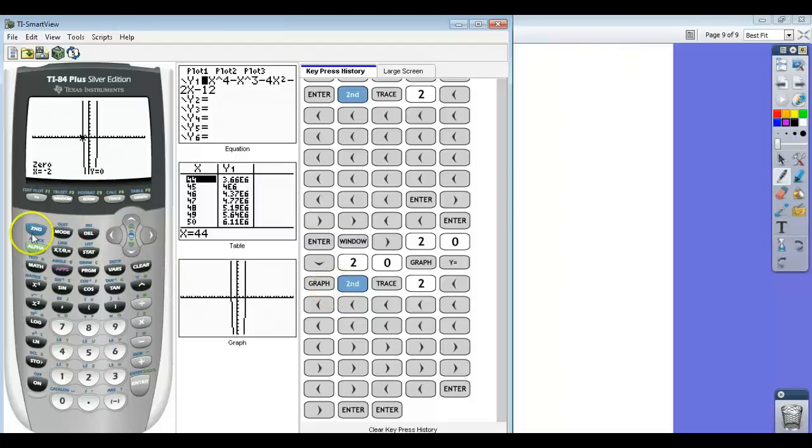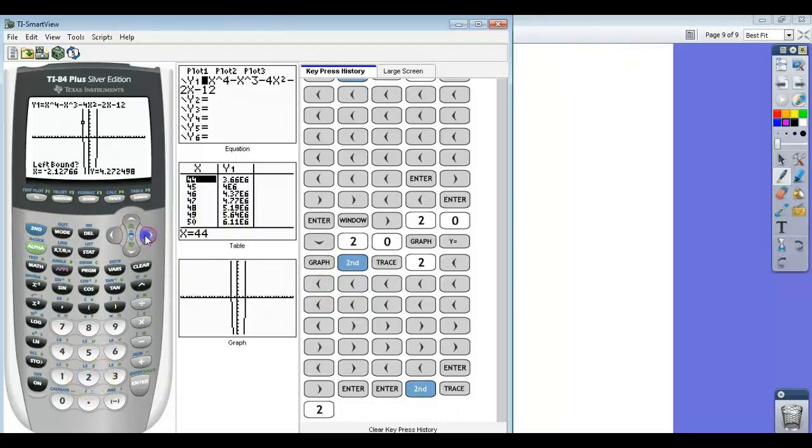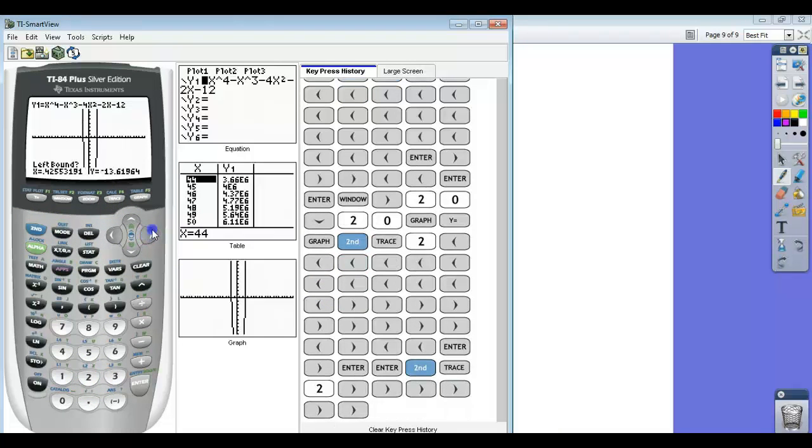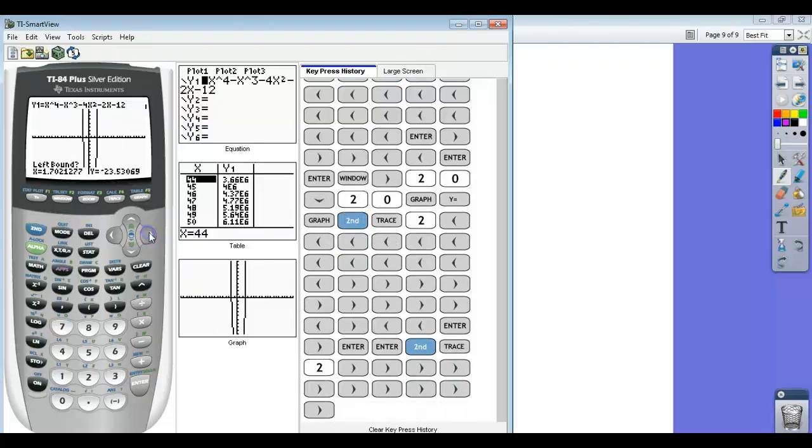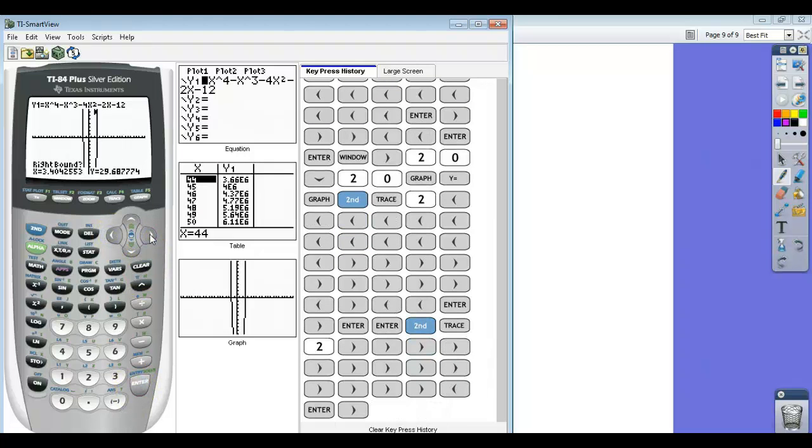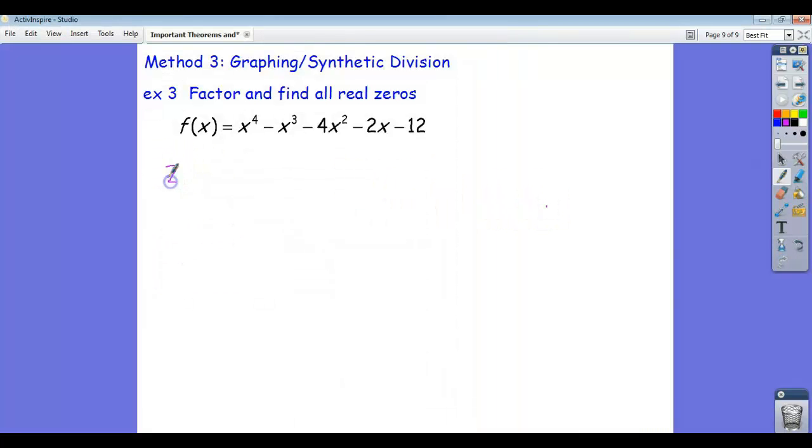So I got one at negative two, and the other one looks like it's at three, just to double check. It's at three. So the two zeros I see in the calculator are negative two and three.